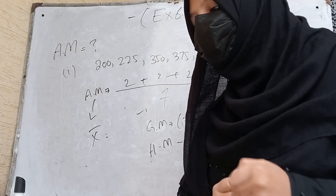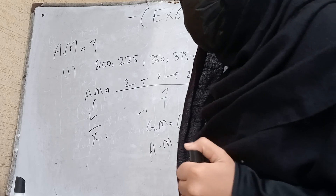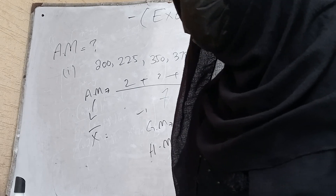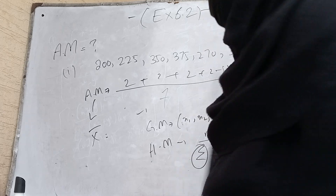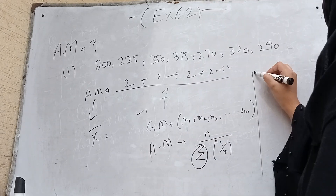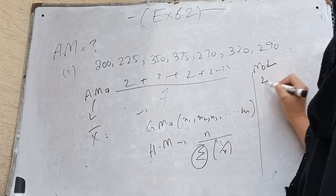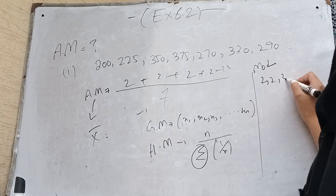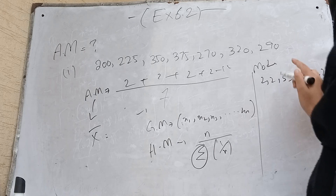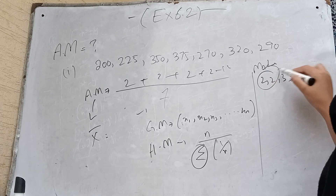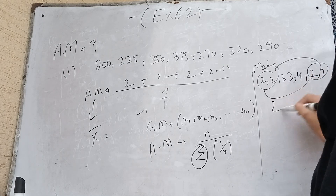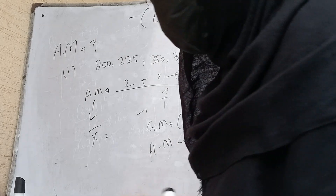Mode is the most frequent observation in the data — it is the observation that occurs the maximum number of times in the given data. For example, when data is given and a value such as 2 is repeating the most times, then 2 is the mode of that data.